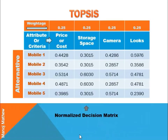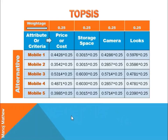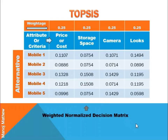The value in each cell is known as the normalized performance value. Next, we multiply the weights of each criterion with the normalized performance value. Here, 0.25 is being multiplied by the normalized performance value. Similarly, the weightages for storage space, camera, and looks are each multiplied by their respective normalized performance values. This gives us the weighted normalized decision matrix.